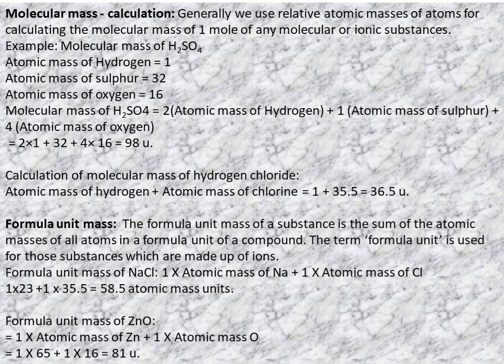Formula unit mass of zinc oxide (ZnO): 1 × atomic mass of Zn + 1 × atomic mass of O = 1 × 65 + 1 × 16 = 81u. So the formula unit mass of ZnO is 81u.